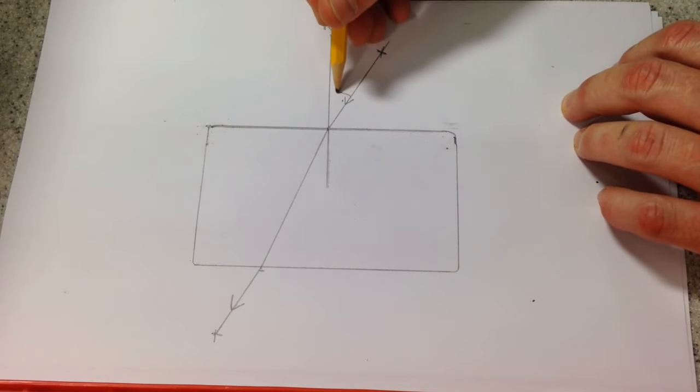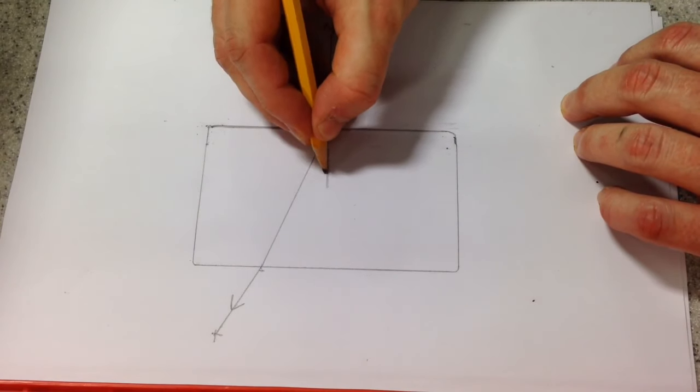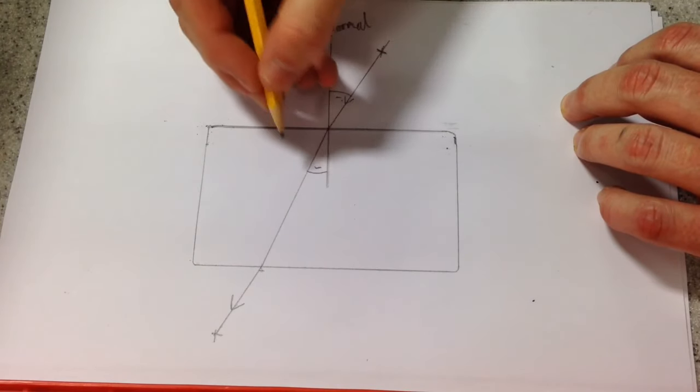What we then do, we can measure our angle of incidence. That's angle I. And our angle of refraction, angle R.